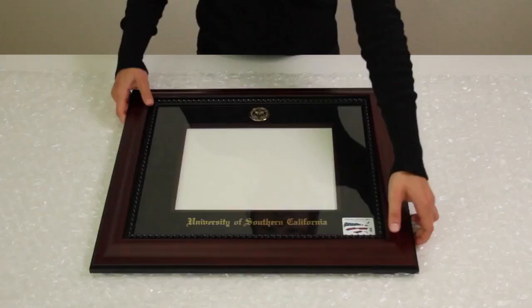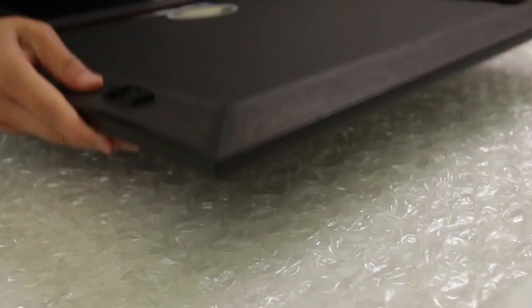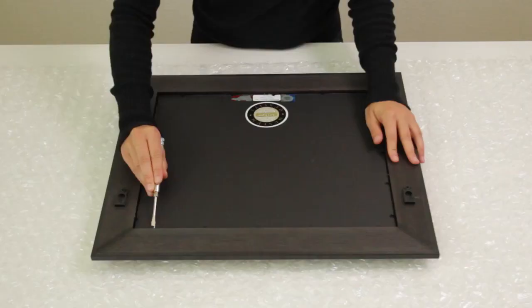Begin spreading the bubble wrap across a flat surface. Be sure to place the frame upside down on the bubble wrap to protect your frame's finish.